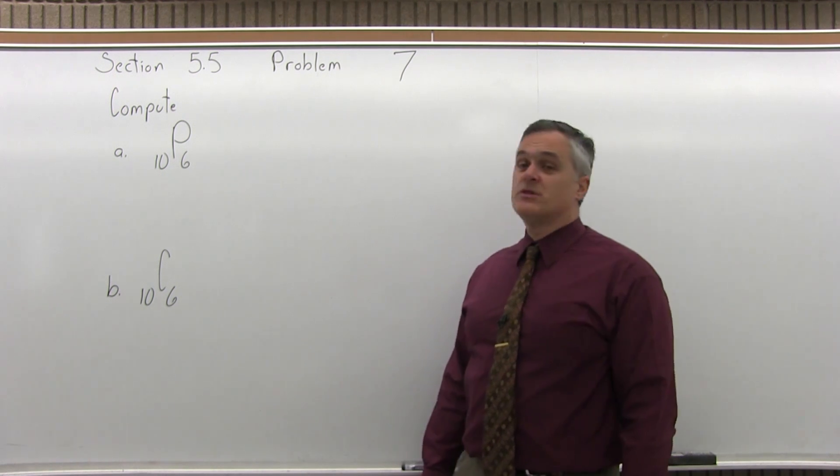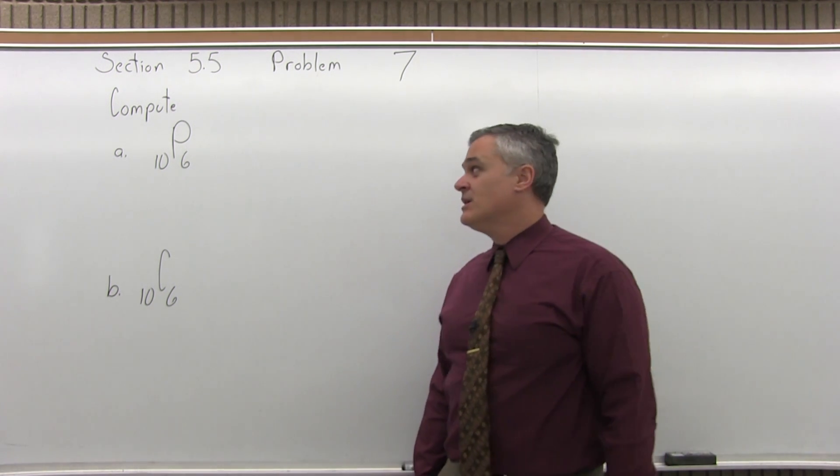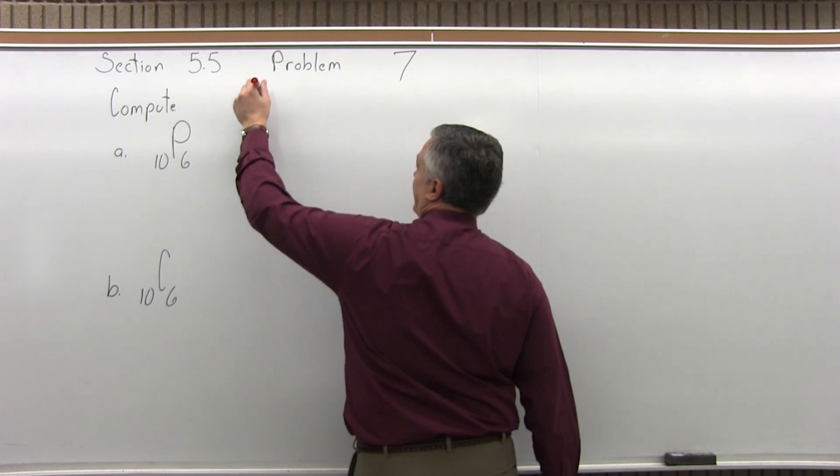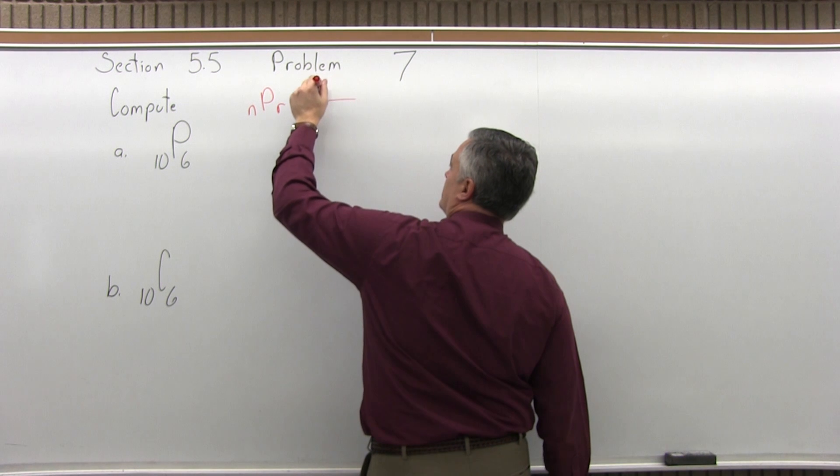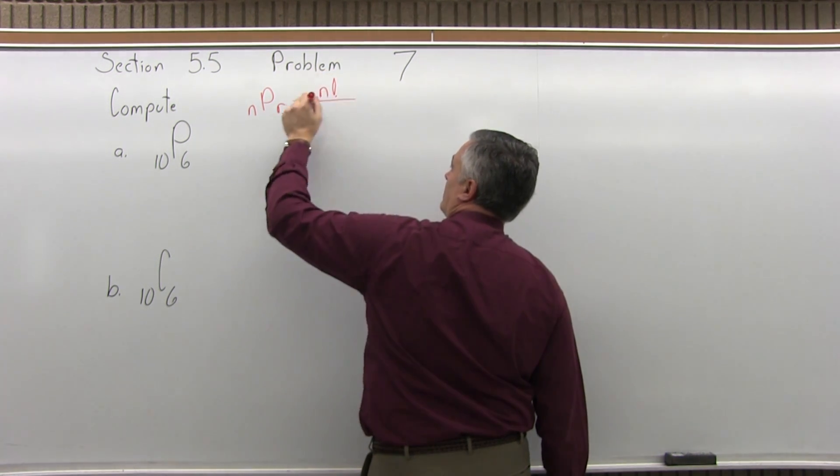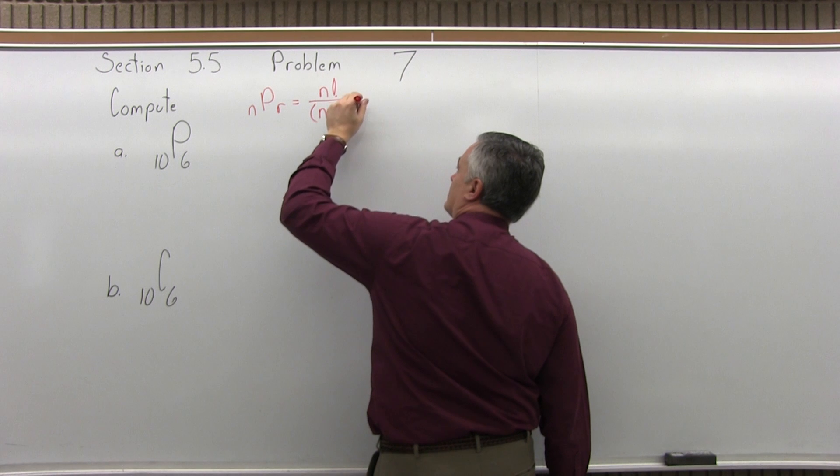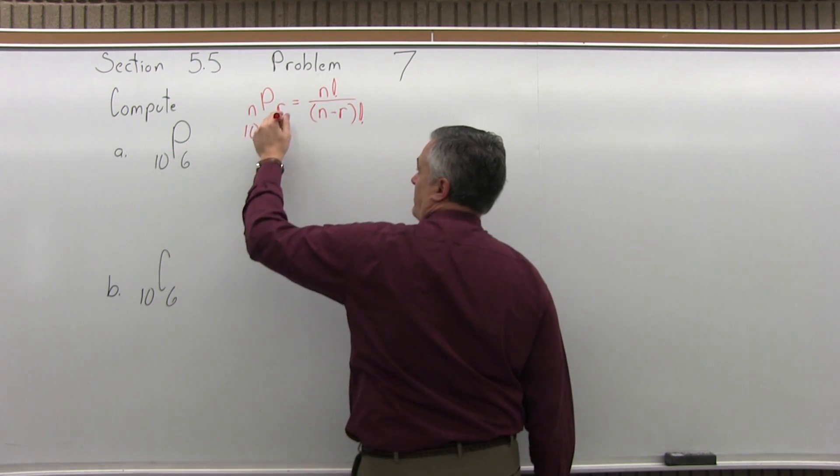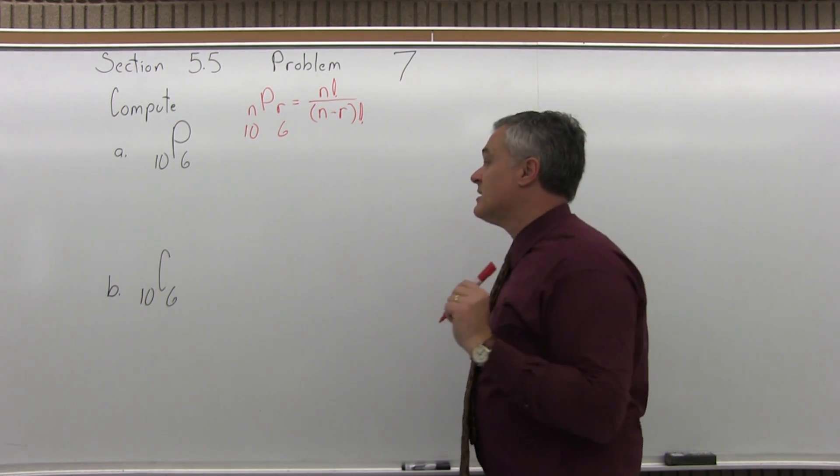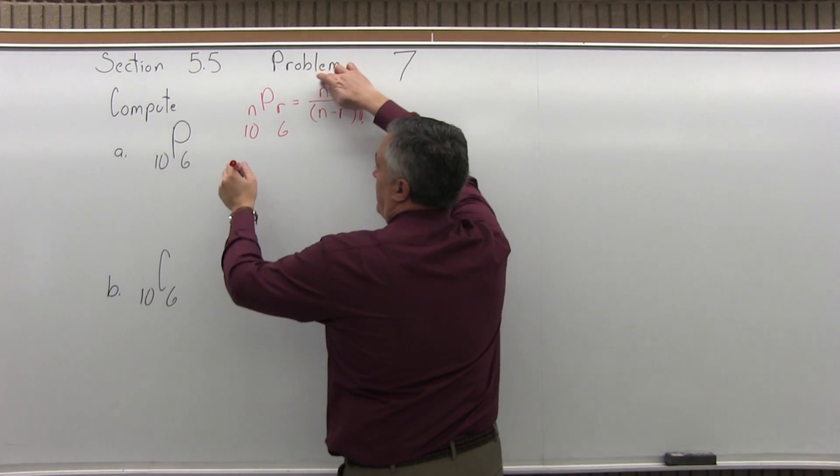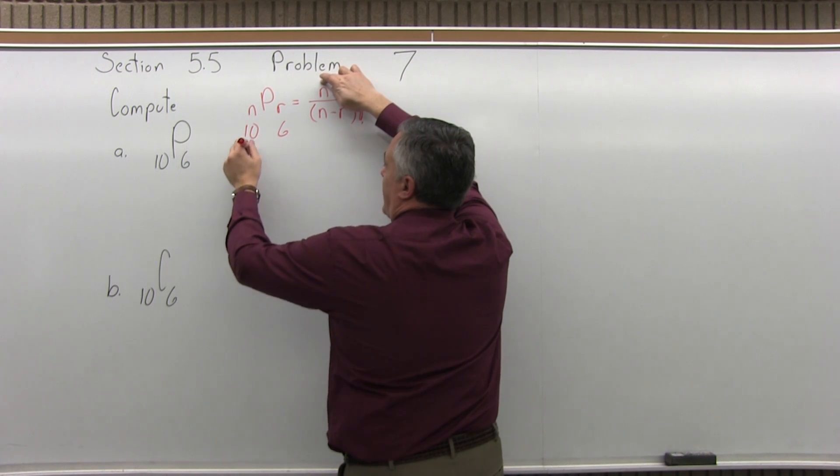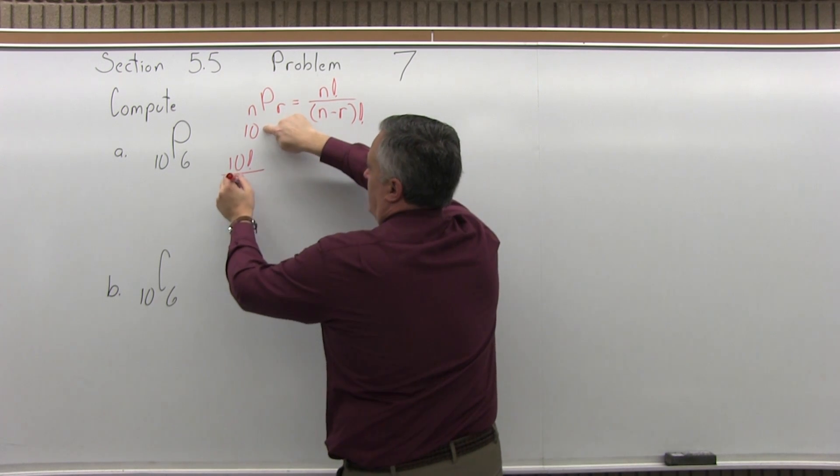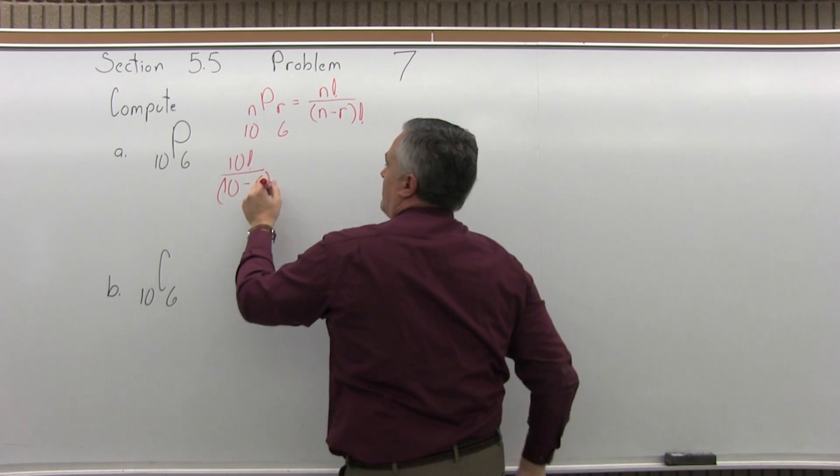It asks us to compute 10 permutation 6 and 10 combination 6. So for the permutation, remember your permutation formula: n permutation r equals n factorial over (n minus r) factorial. Now the larger number is the n, so for this problem that would be 10. The smaller number is the r, so again for this problem that would be 6. So start putting it into your formula, so on top n factorial will be 10 factorial. And underneath in the parentheses, n minus r will be 10 for the n minus 6 for the r in parentheses factorial.